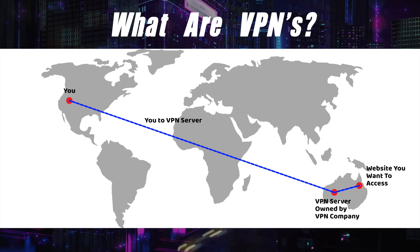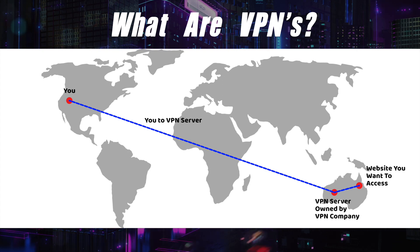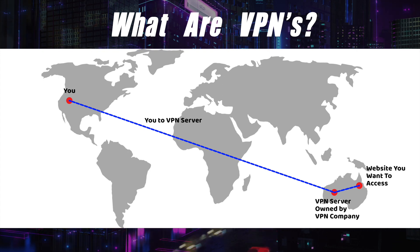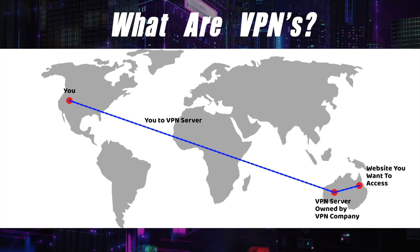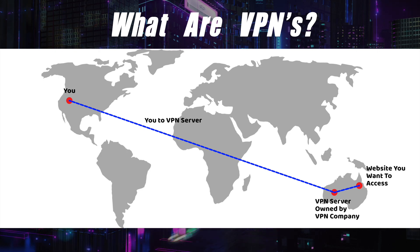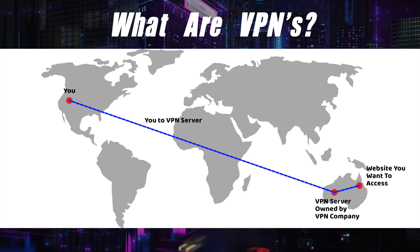So it goes from you to the VPN server to the website and then back. As far as the websites you visit are concerned, your IP address is in Australia, so you can access their Netflix, websites only available in Australia, loads of different streaming services, holiday sites. And that's really cool.